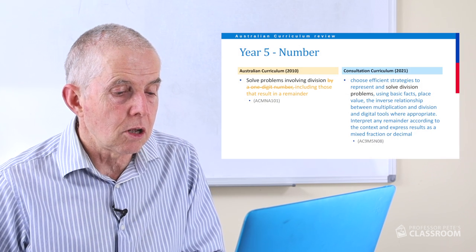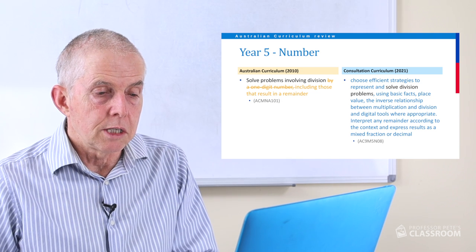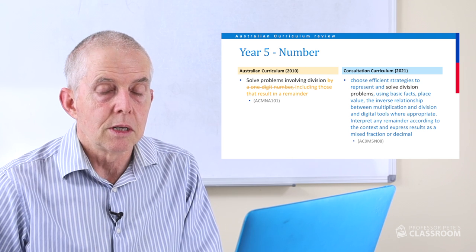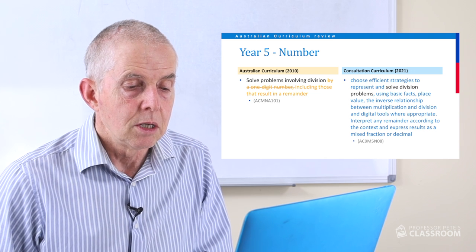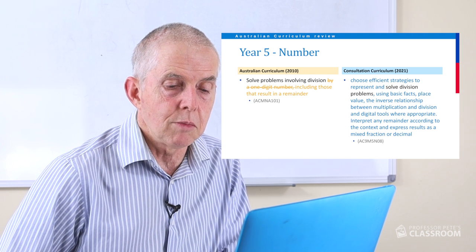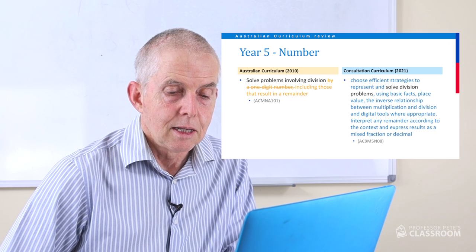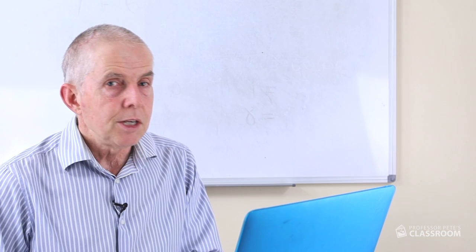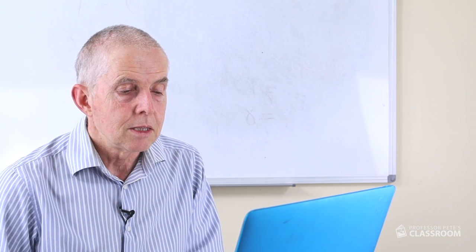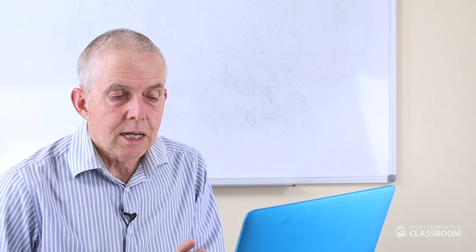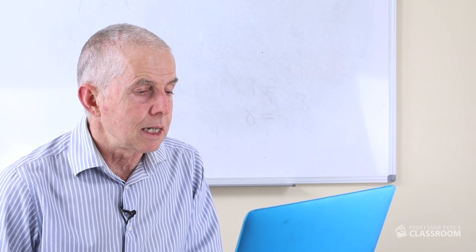We'll move on to number eight. There are nine number content descriptors in Year 5 in total. We have a long content descriptor — almost all in blue. It started off as 'solve division problems' and it's ended up with: choose efficient strategies to represent and solve division problems using basic facts, place value, the inverse relationship between multiplication and division and digital tools where appropriate. Interpret any remainder according to the context, and express results as a mixed fraction or decimal. This is really good — it has really helped to beef up what's being asked of teachers and students in terms of division. Interpreting remainder was a big gap in the old curriculum, and I'm glad to see that it's been filled.